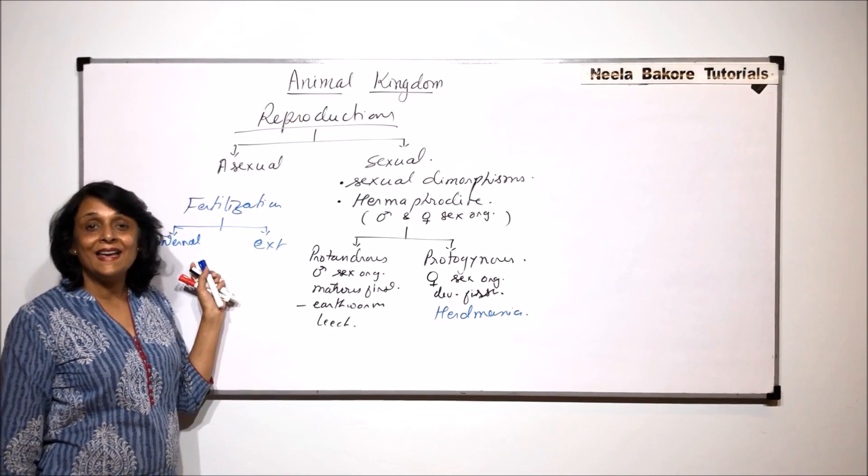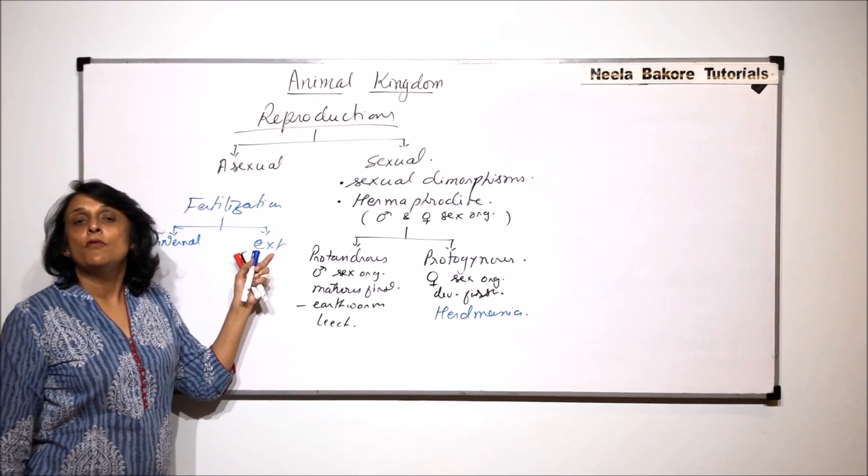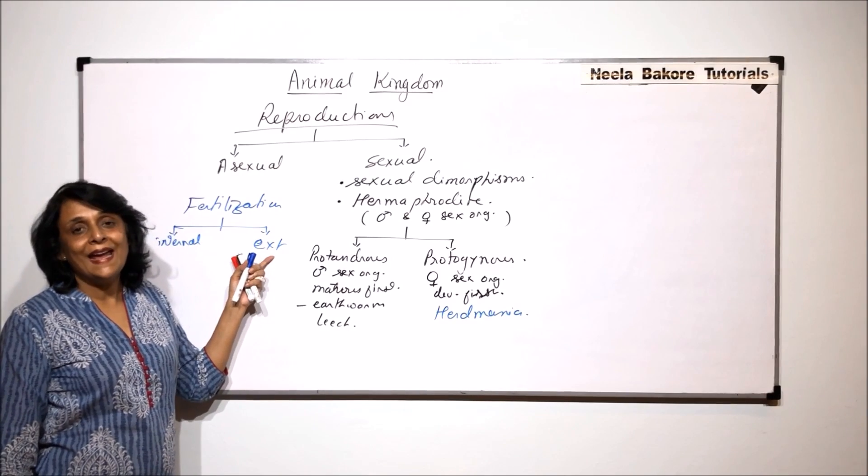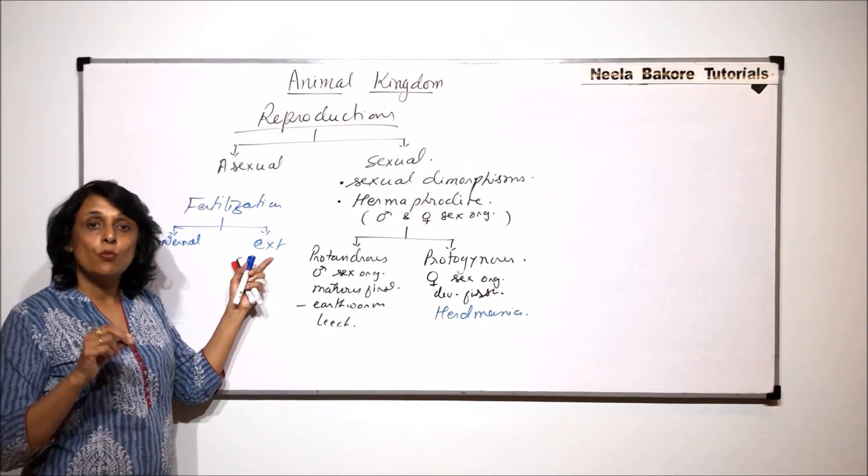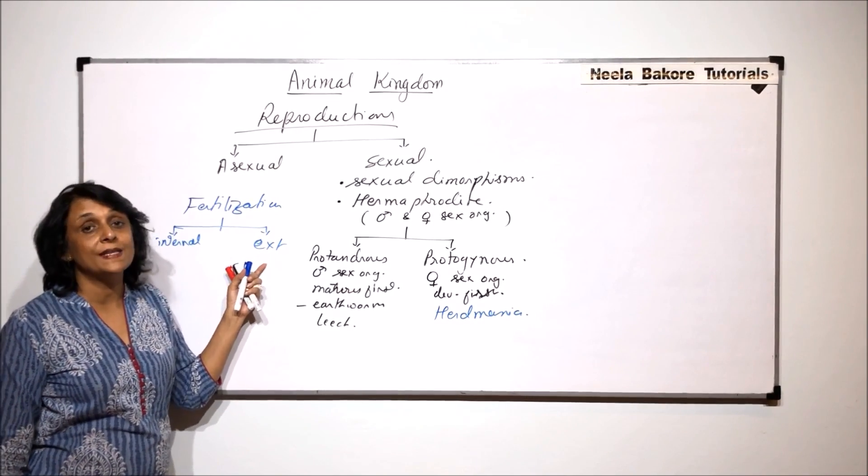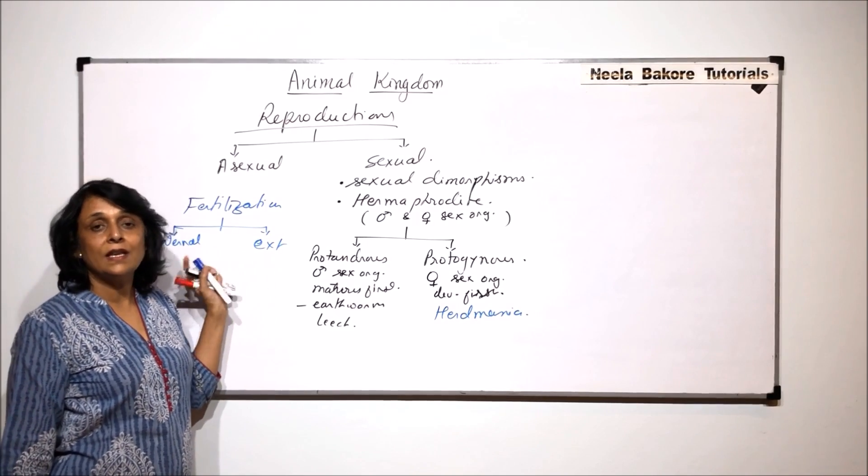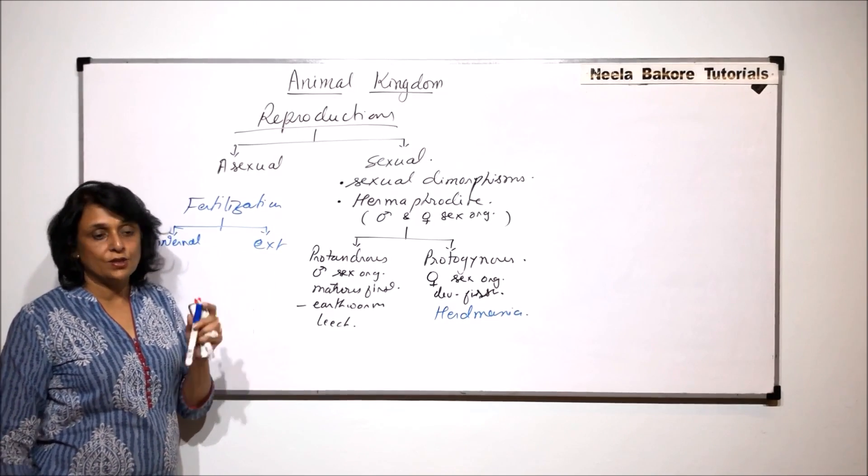This is normally seen in higher animals. In frog-like animals, the eggs and the male gametes are released in water and fertilization takes place there. So external as well as internal fertilizations are seen.